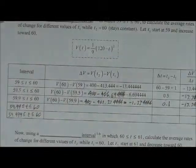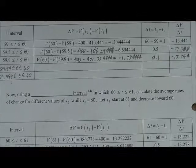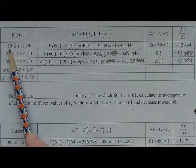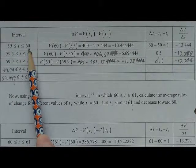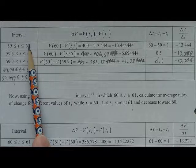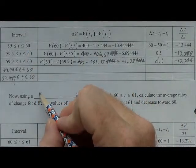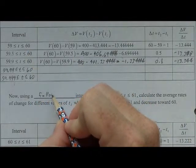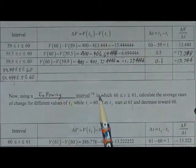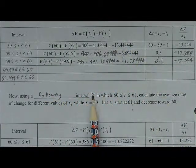So now what we're going to do is, so that was the preceding interval where the time T1 was in that minute before 60 minutes. Now we're going to use a following interval, so this technique is the preceding and following intervals, and this is technique 1, part B.